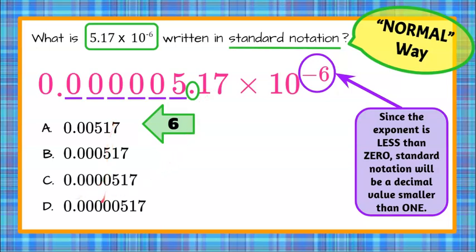So we go down to our answer choices and D, 1, 2, 3, 4, 5 zeros. So right here is our number in standard notation.